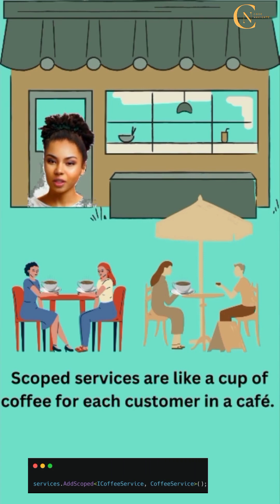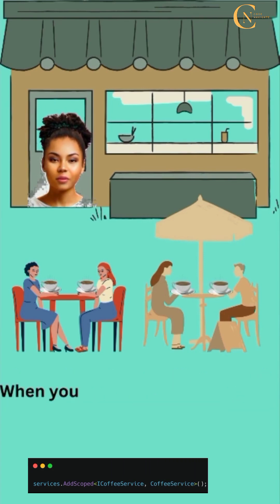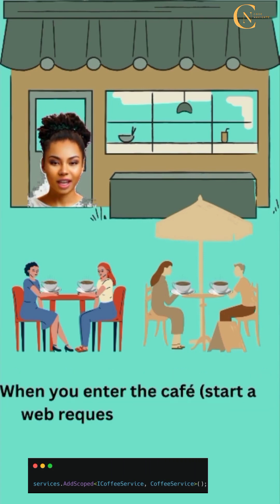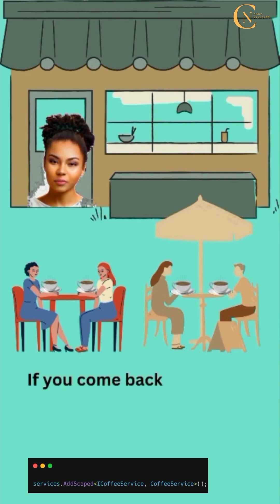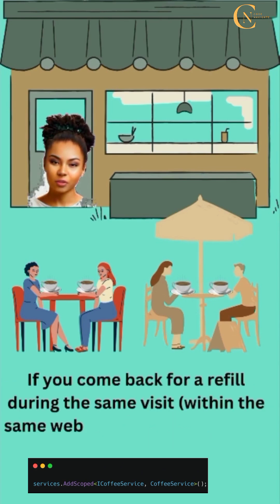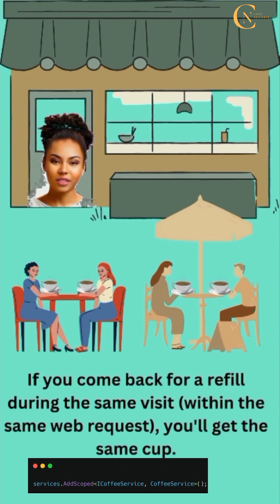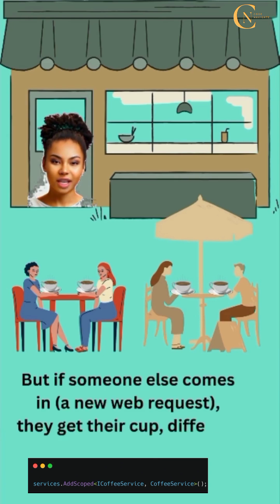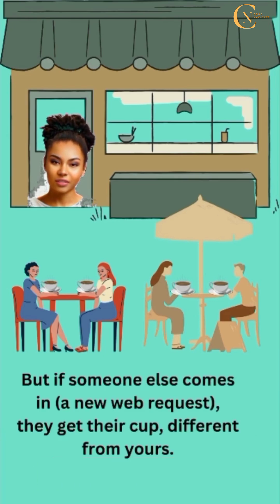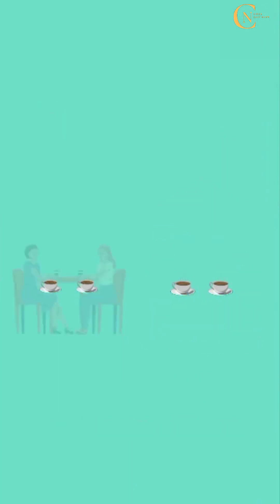Scoped services are like a cup of coffee for each customer in a cafe. When you enter the cafe — like starting a web request — you get your unique cup of coffee. If you come back for a refill during the same visit, you'll get the same cup. But if someone else comes in, like a new web request, they get their own cup.